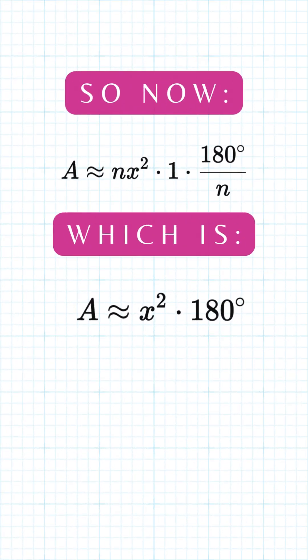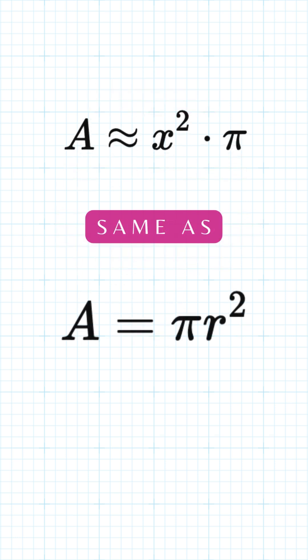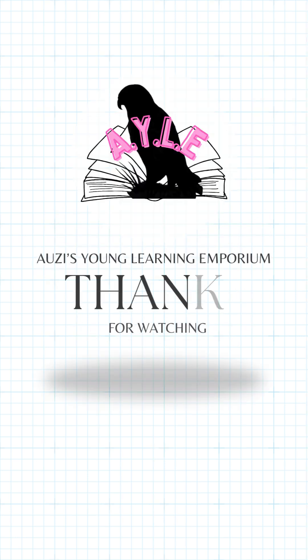Now when we replace the sin and cos terms, we will get A is equal to x squared times 180 degrees. And since 180 degrees is equal to pi radians, our formula becomes A is equal to x squared times pi, which is the same as pi r squared, which is the area of a circle. Thank you for watching.